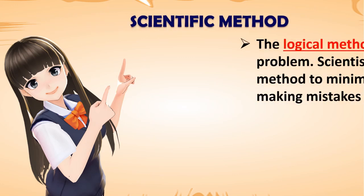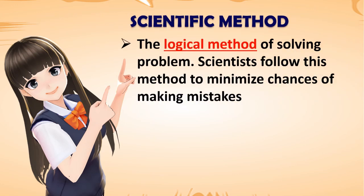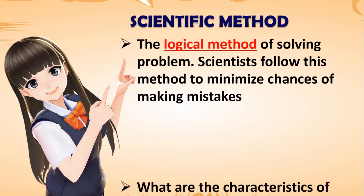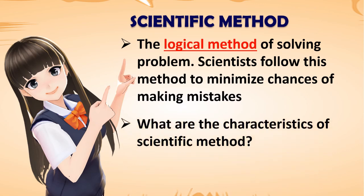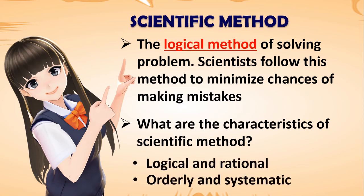What is scientific method? Scientific method is a logical method of solving problem. Scientists follow this method to minimize chances of making mistakes. What are the characteristics of scientific method? They are logical, rational, orderly, and systematic.